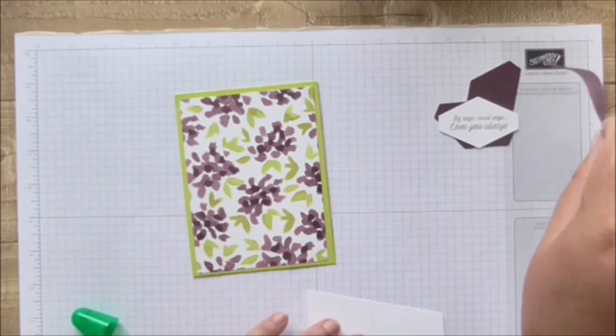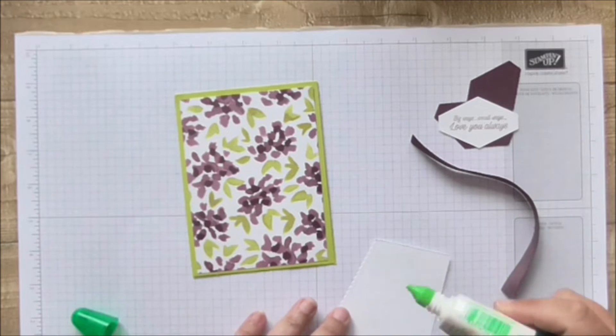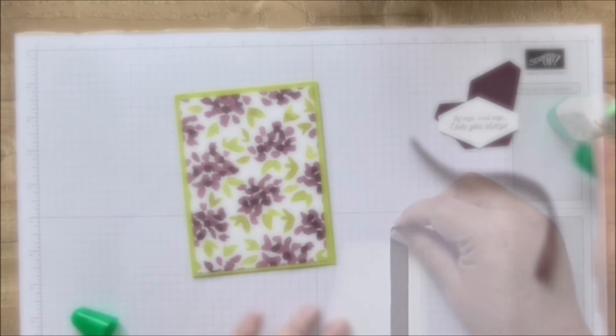But I'm going to add this ribbon. What I'm going to do is I'm just going to pop some glue across there, about three quarters of an inch up from the bottom.